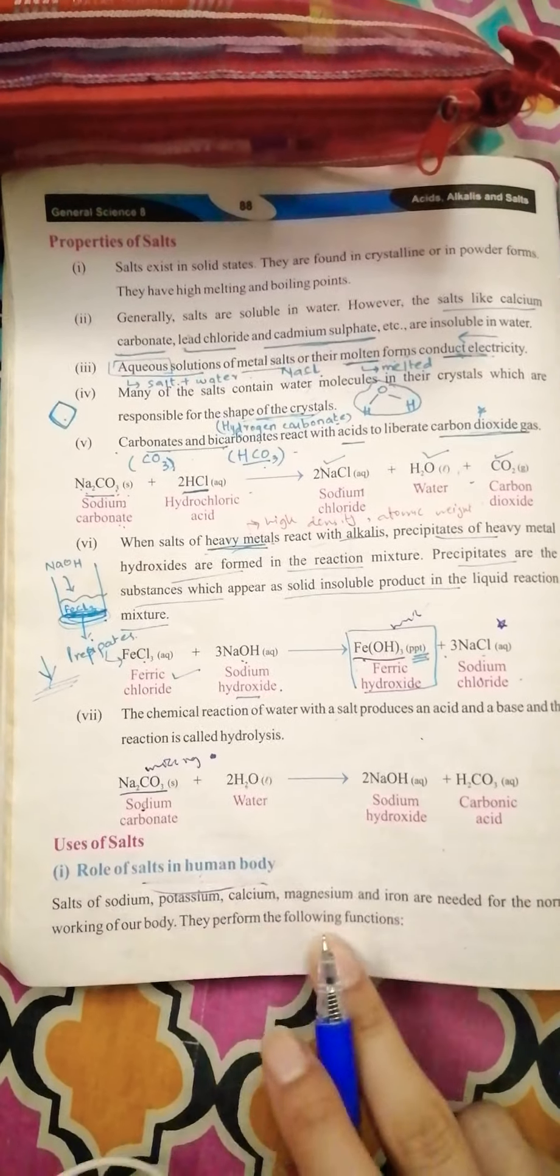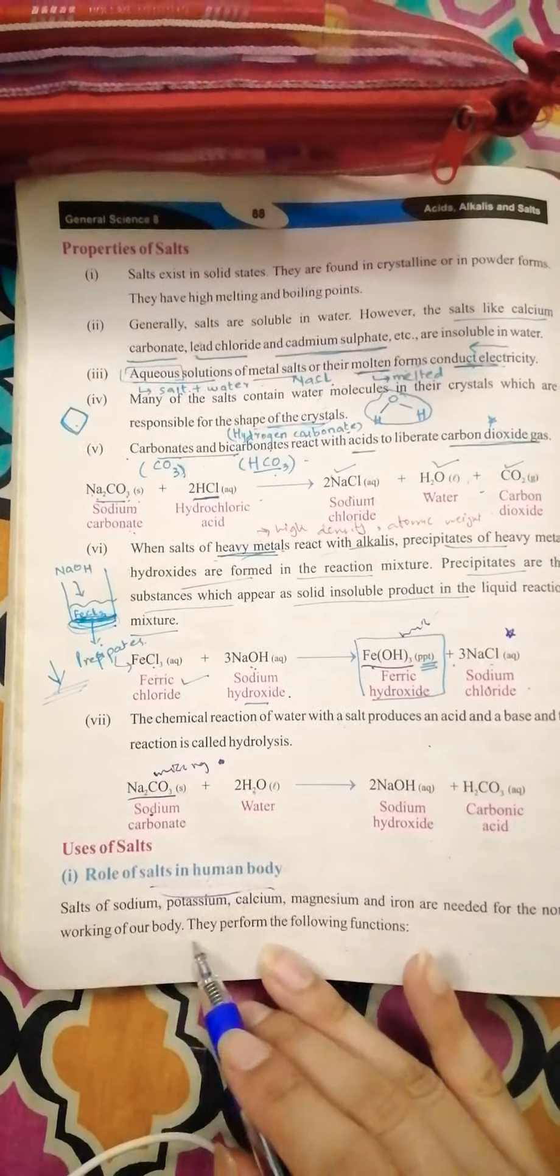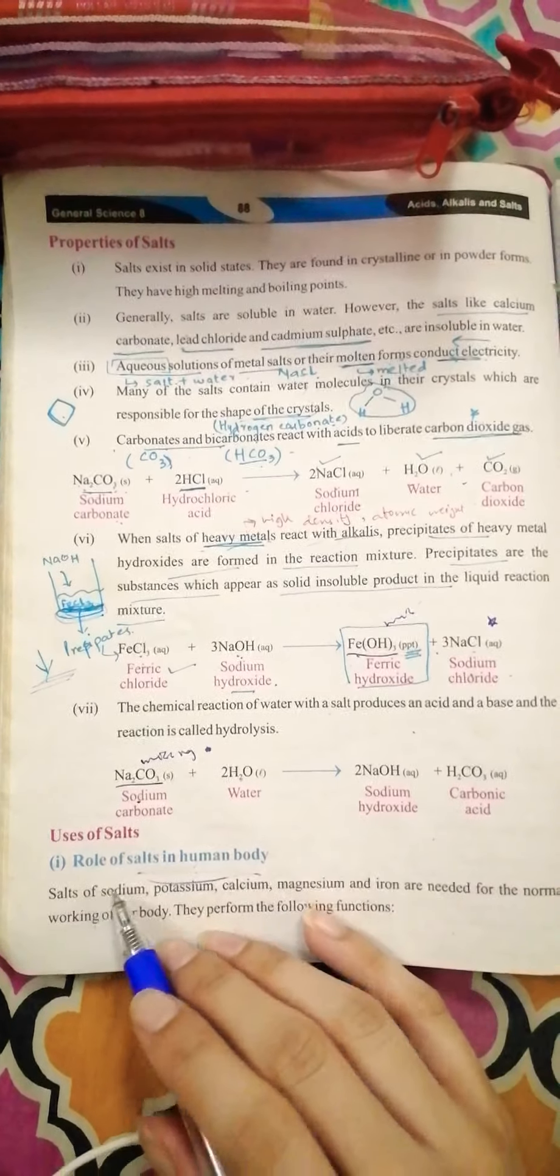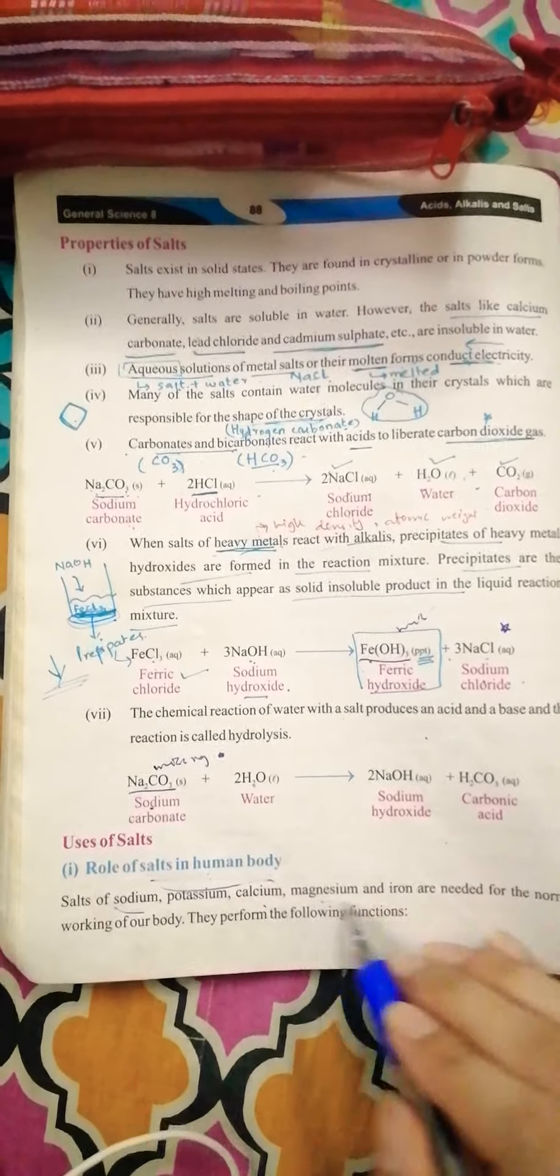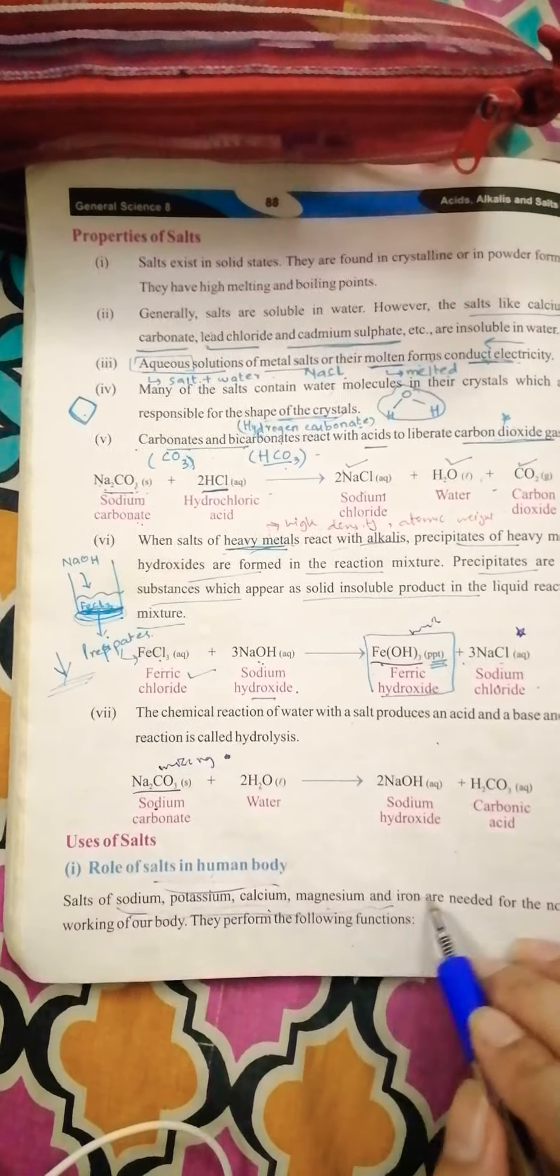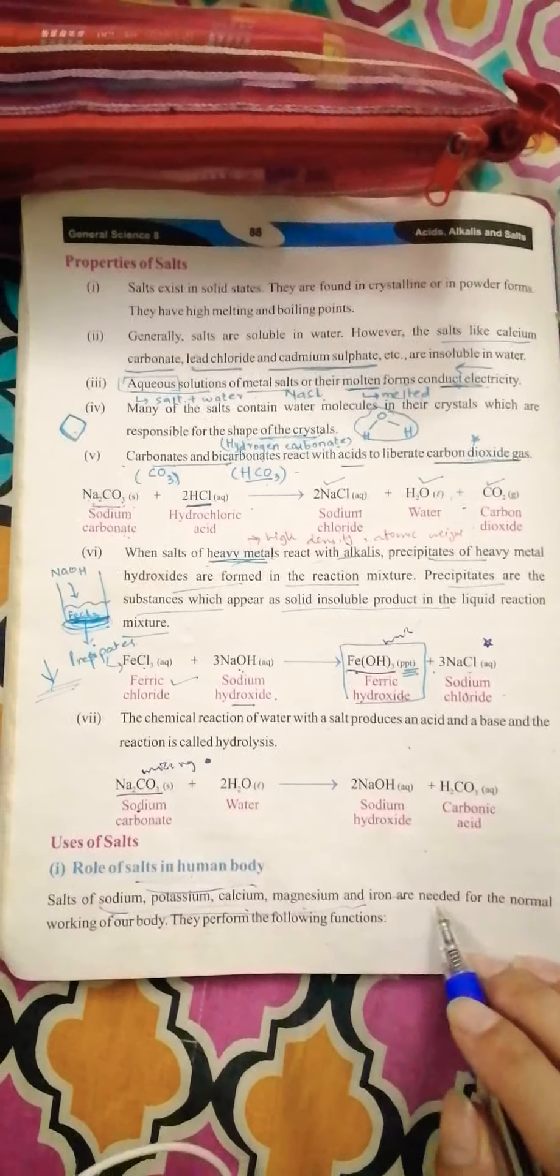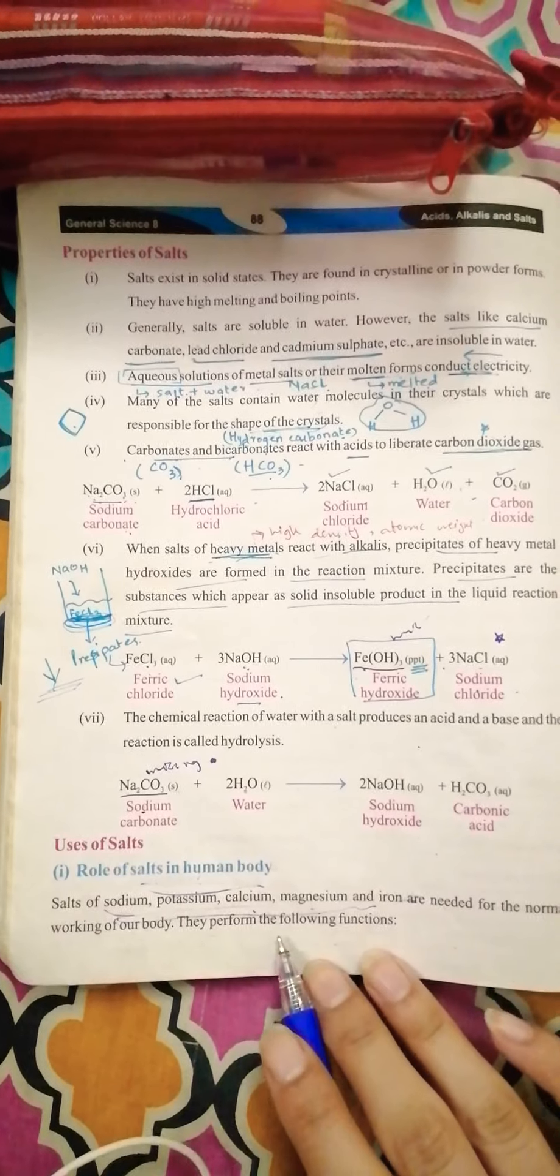Salts of sodium, potassium, calcium, magnesium and iron are needed for normal working of our body. They perform the following functions. These are all metals - when different salts are made in human body, they perform different functions. One by one, we can see how these functions perform.